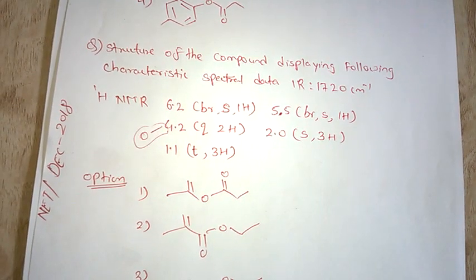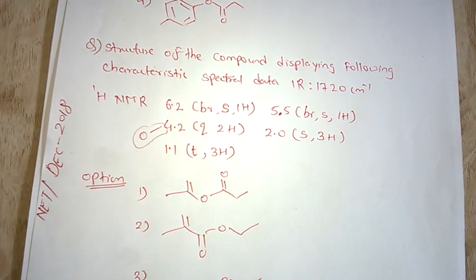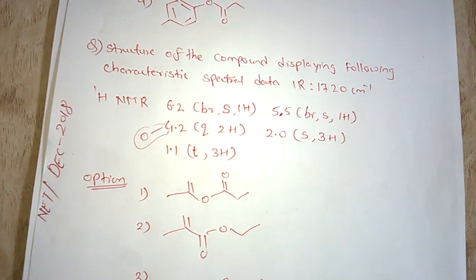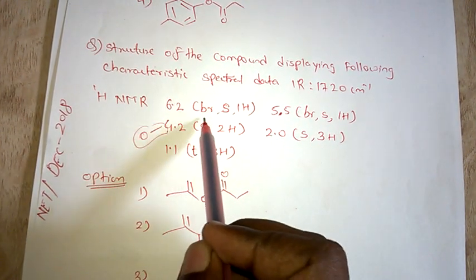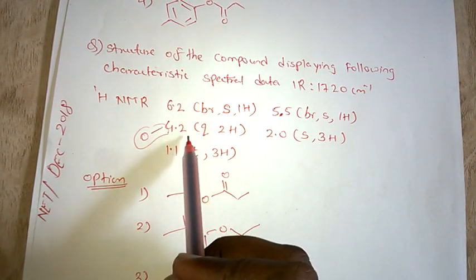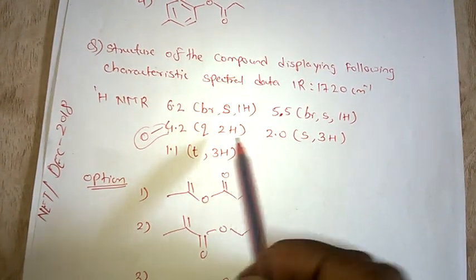Hello guys, today we are going to solve a NET December 2018 question. Let's see the structure of a compound displaying the following characteristic spectral data. IR is given at 1720 cm⁻¹. H1-NMR values: 6.2 broad singlet 1H, 5.5 broad singlet 1H, 4.2 quartet 2H, 2.0 singlet 3H, and 1.1 triplet 3H.